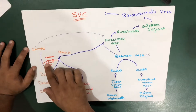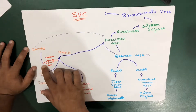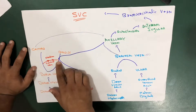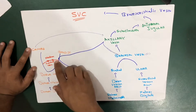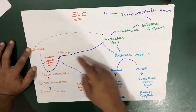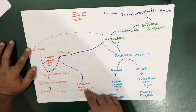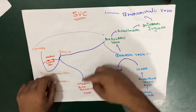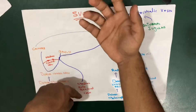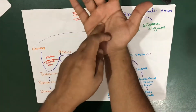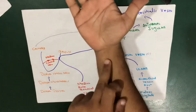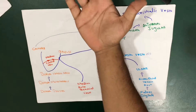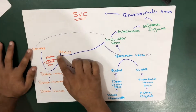They both come together and join at what is called the median cubital vein. The median cubital vein connects drainage from the cephalic towards the cubital, and from this cubital vein it joins again with the median antebrachial vein.